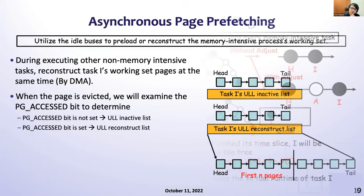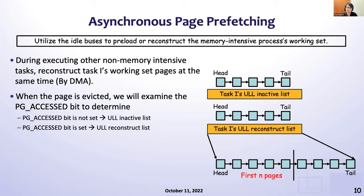Our third design aims to reconstruct the memory-intensive process working set. The rationale is that non-memory-intensive processes do not need to handle page faults often, and thus idle bandwidth can be used to preload or reconstruct the working set belonging to the next memory-intensive process. We maintain a reconstruct list for each memory-intensive process. Pages are inserted into the list when the correlated access bit is set, and our design reconstructs the first N pages in the reconstruct list.